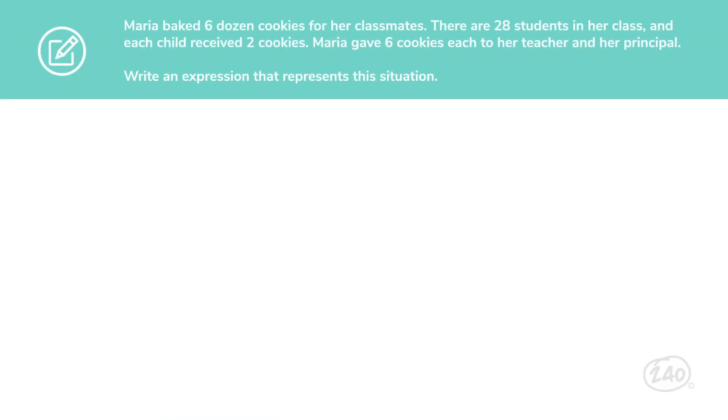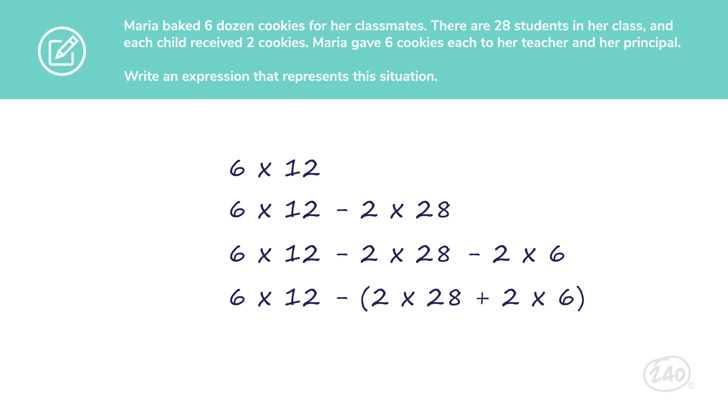Let's look at an example that will put this into practice. Maria baked six dozen cookies for her classmates. There are 28 students in her class, and each child received two cookies. Maria gave six cookies each to her teacher and her principal. Let's write an expression that represents this situation. Six times 12 gives us the total number of cookies in six dozen, which is how many cookies Maria baked. Then we need to determine how many cookies she gave away. If each of her classmates receives two cookies and there are 28 children, 2 times 28 will be the number of cookies that the children get. We need to subtract this from the total. If the teacher and principal each receive six, that's another 6 times 2. These will have to be subtracted from the total too. Since both of these quantities are being subtracted, we can put them in parentheses and move the minus sign outside of the parentheses. So we have 6 times 12 minus the quantity of 2 times 28 added to 2 times 6.